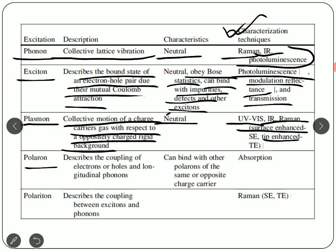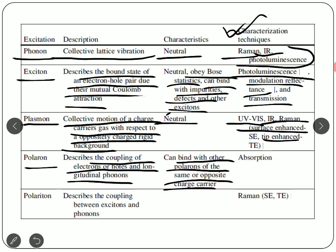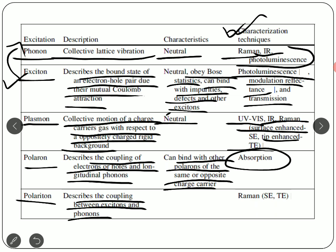Then we have the polaron, which describes the coupling of the electron or holes with the longitudinal phonon — basically a coupling between the lattice vibration and the electrons and holes. This interaction results in the polaron, which can bind with other polarons of the same or opposite charge carrier, and we can do absorption studies from this. Finally, there is the polariton, which describes the coupling between the exciton and the phonons. To know the connection between them we study the polariton, and here we can also conduct Raman studies, both surface-enhanced and tip-enhanced.